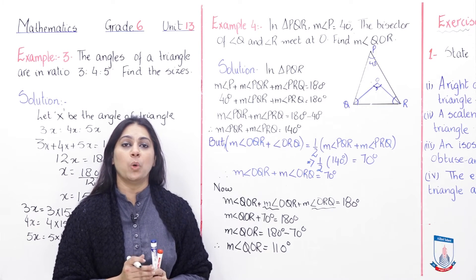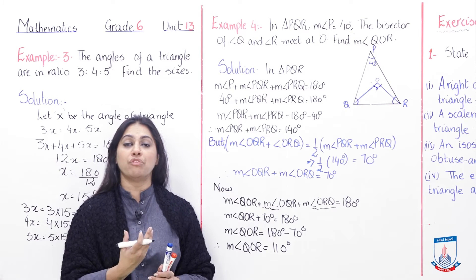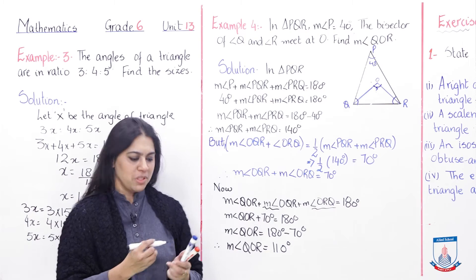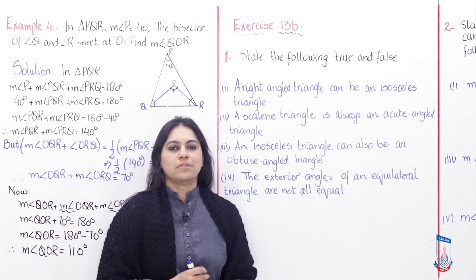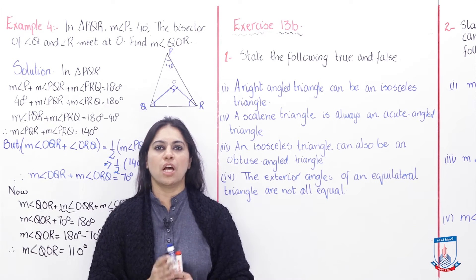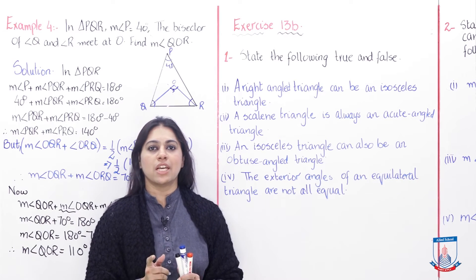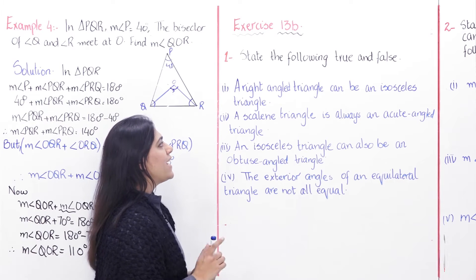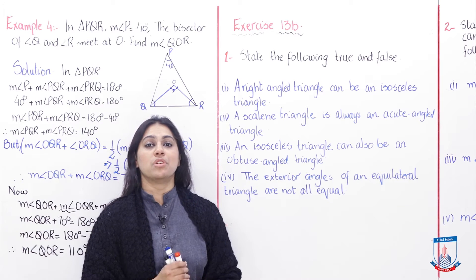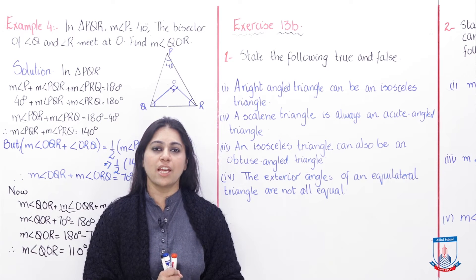We are done with the examples. I hope you got the concept of how to find angles, the sum of interior angles, and how to find exterior angles. Now we are moving towards the exercise — Exercise 13b. The first question says: state the following true and false. We read each statement and identify which is true and which is false. First statement: a right-angle triangle can be an isosceles triangle.